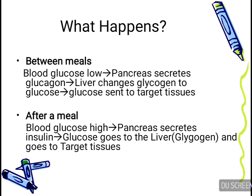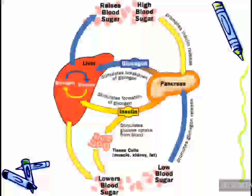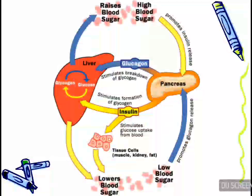After a meal, when blood glucose is high, the pancreas secretes insulin, glucose enters the liver, glycogen is formed, and it is sent to the target tissues. This diagram shows how glucagon and insulin work hand in hand to lower or raise the blood sugar level.